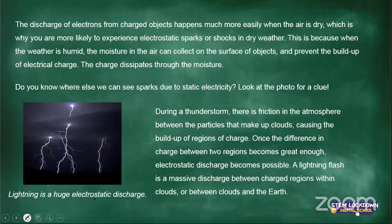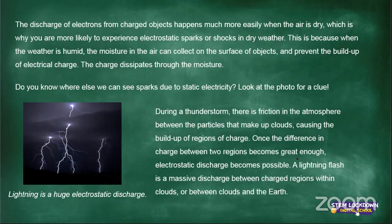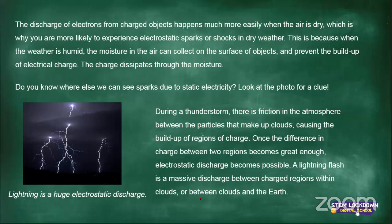Lightning is a huge electrostatic discharge. During a thunderstorm, there is friction in the atmosphere between the particles that make up clouds. When clouds rub against each other, it causes friction and a build-up of regions of charges. Once the difference in charges between two regions becomes great enough, it causes an electrostatic discharge — and that is the lightning flash you see occurring between clouds.